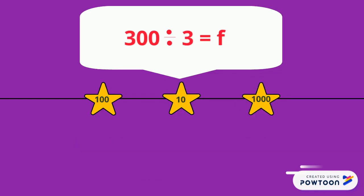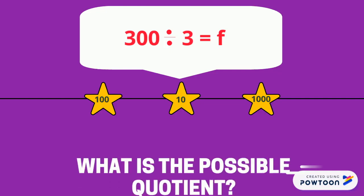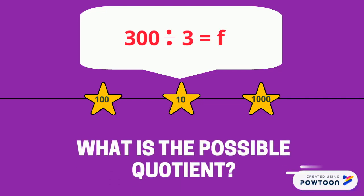300 divided by 3 is equal to f. f is a variable that represents our quotient. So what is the possible quotient? If you said 100, you are correct. Let's recap now guys.